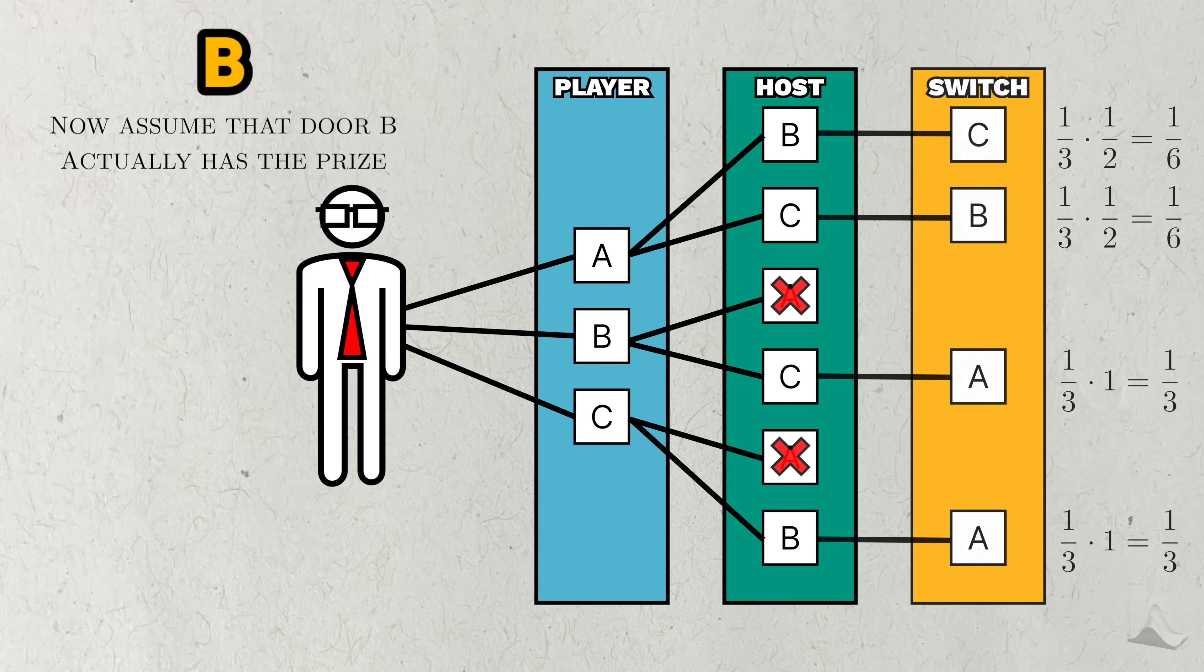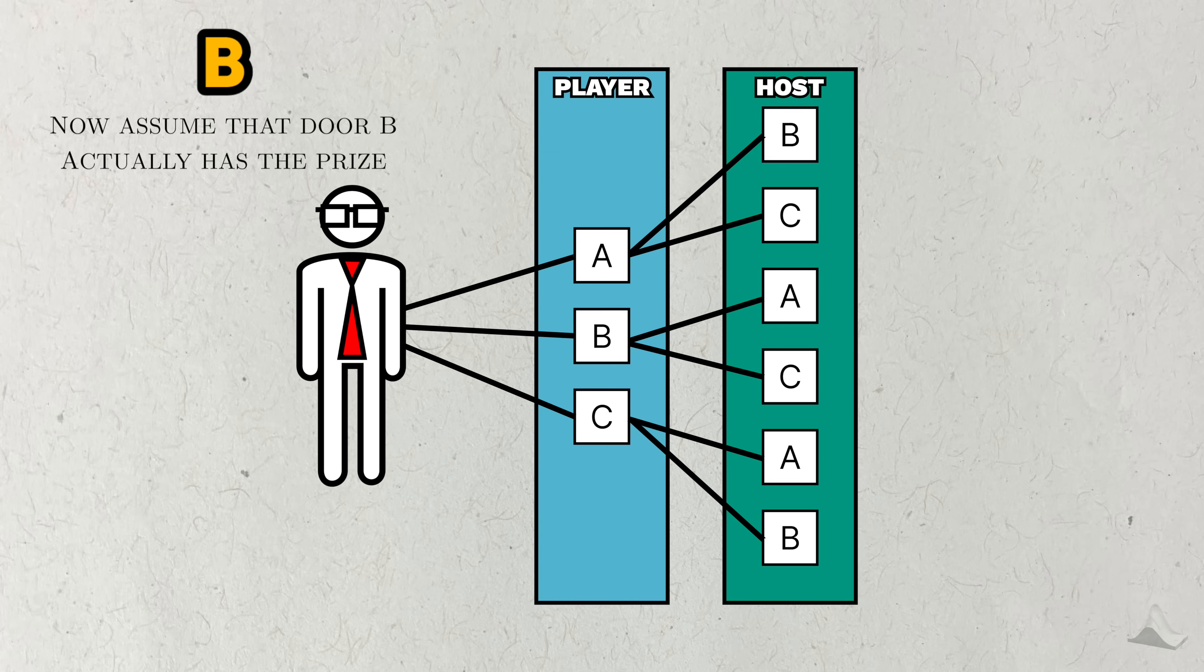To demonstrate this, let's see how this diagram changes if the prize were actually behind door B. What changes are the host's reactions. In this case, if the player picks A, then the host's only option is to pick C.